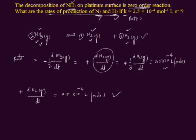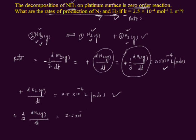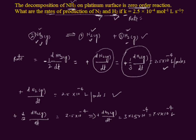Similarly, we find the rate of production of hydrogen gas. The rate expression for hydrogen gas gives: +(1/3) × D[H₂] / dt = 2.5 × 10⁻⁴. Transferring the 3 to the right side by multiplying: +D[H₂] / dt = 3 × 2.5 × 10⁻⁴ = 7.5 × 10⁻⁴ mol·L⁻¹·s⁻¹. This is the rate of production of hydrogen gas in the reaction.